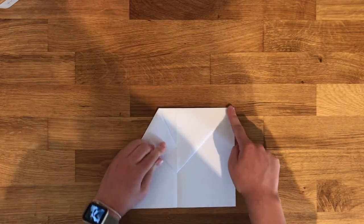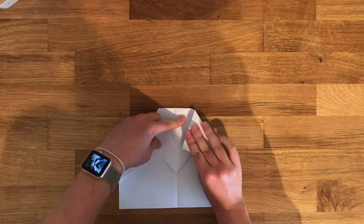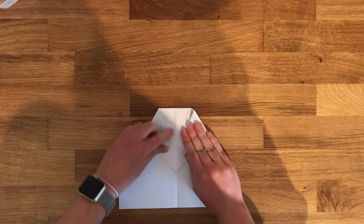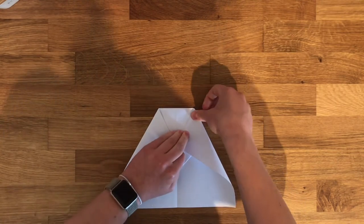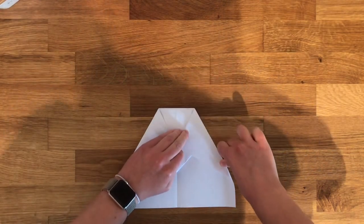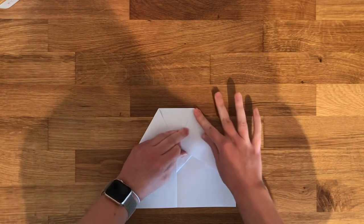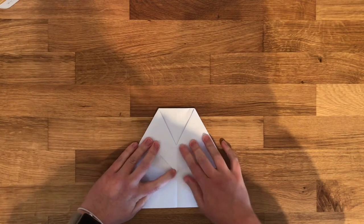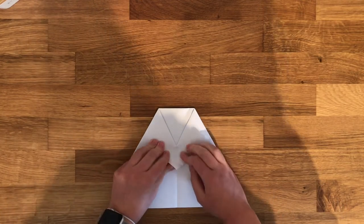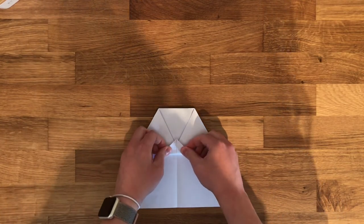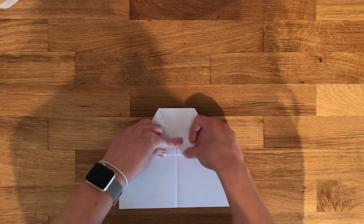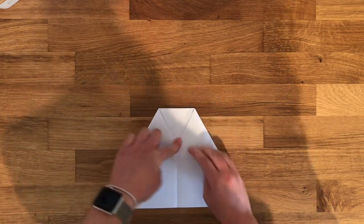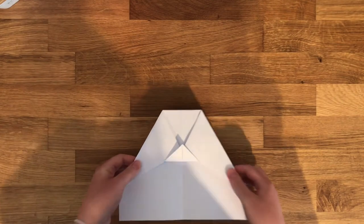Now you're going to do the same thing to the other corner. Make sure it meets in the middle, then you're going to press it down. Then you're going to take the little point down here and fold it up over those flaps. Once you're securing them down, then it should look like that.